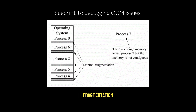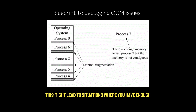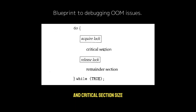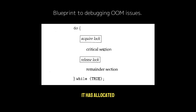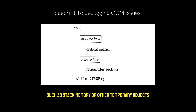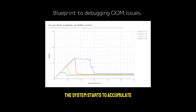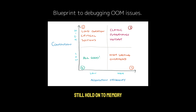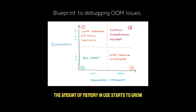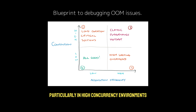Also consider memory fragmentation — it happens when your application allocates and frees memory over time, leaving tiny holes that cannot be filled, leading to situations where you have enough total free memory but can't allocate a large enough block. As a bonus, consider lock contention: when a goroutine is blocked waiting for a lock, it remains in memory and doesn't immediately release its allocated resources, such as stack memory or temporary objects. If a large number of goroutines are all waiting on the same lock, the system accumulates significant memory usage even if none of them are actively doing work. In high-concurrency environments with large critical sections, this can cause memory to grow problematically.